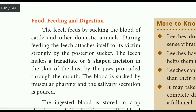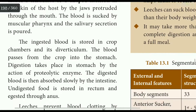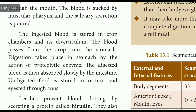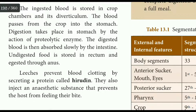The leech feeds on blood from cattle, animals, and humans. The crop and its diverticulum store a large amount of blood. Digestion occurs in the stomach using proteolytic enzymes. Nutrients are absorbed in the intestines.